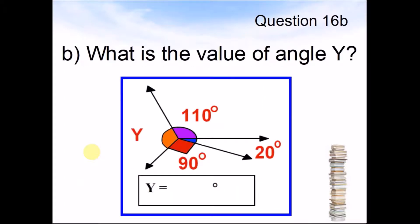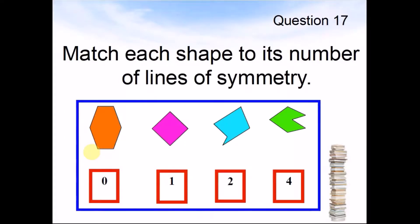Question 17. Match each shape to its number of lines of symmetry. You have 0, 1, 2 or 4. Pause the video and work out the answer.